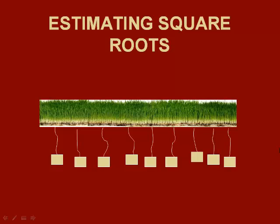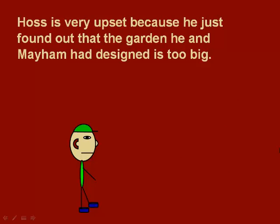Today's lesson is on estimating square roots. Haas is very upset because he just found out that the garden he and Mayhem had designed is too big for their backyard.